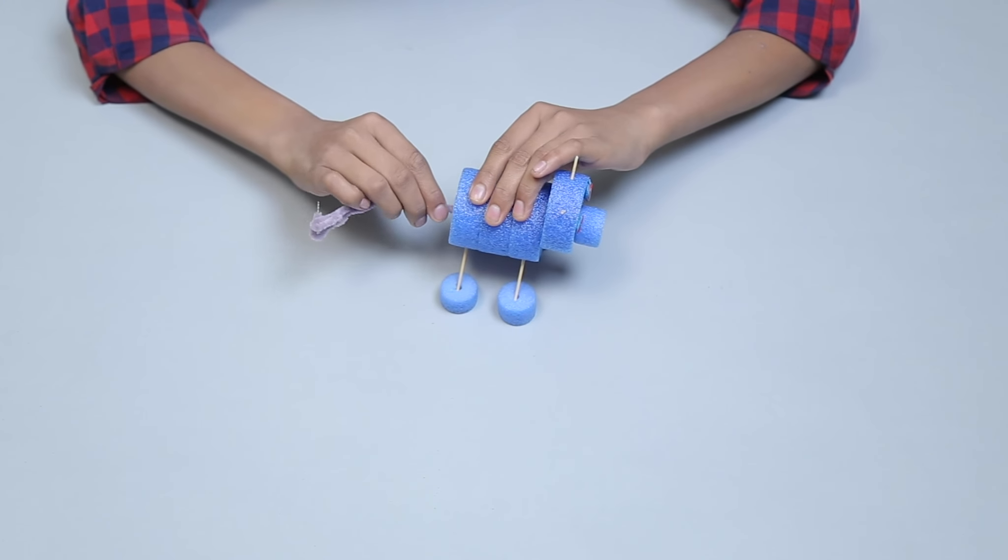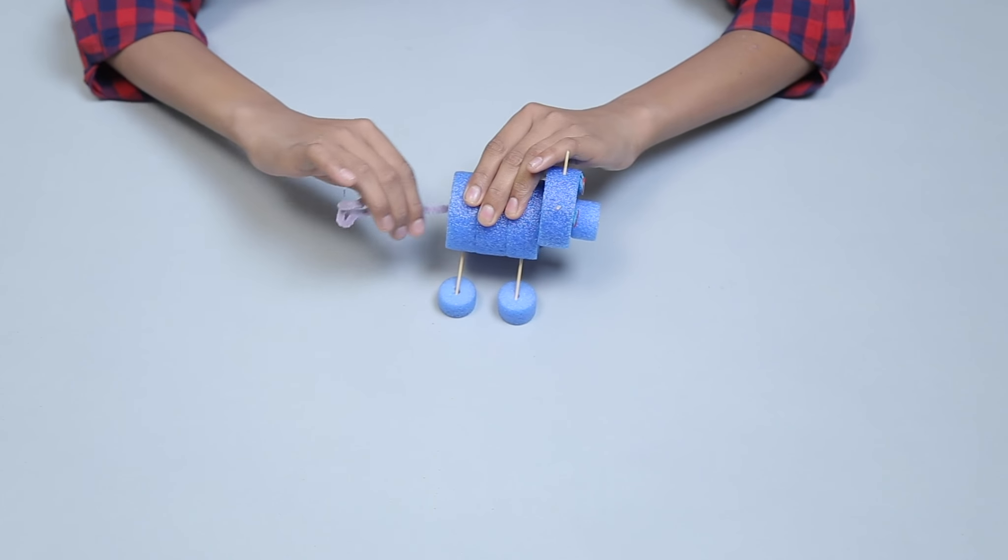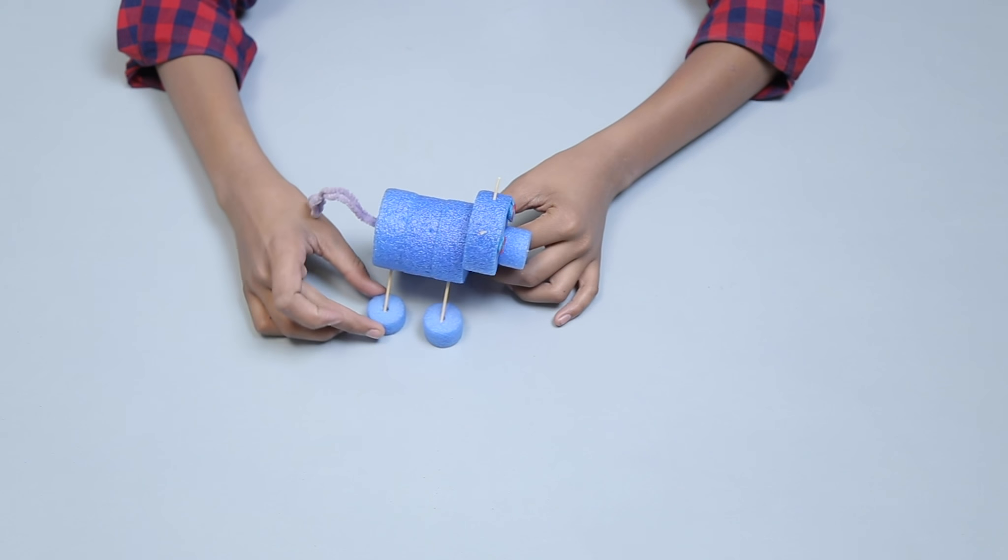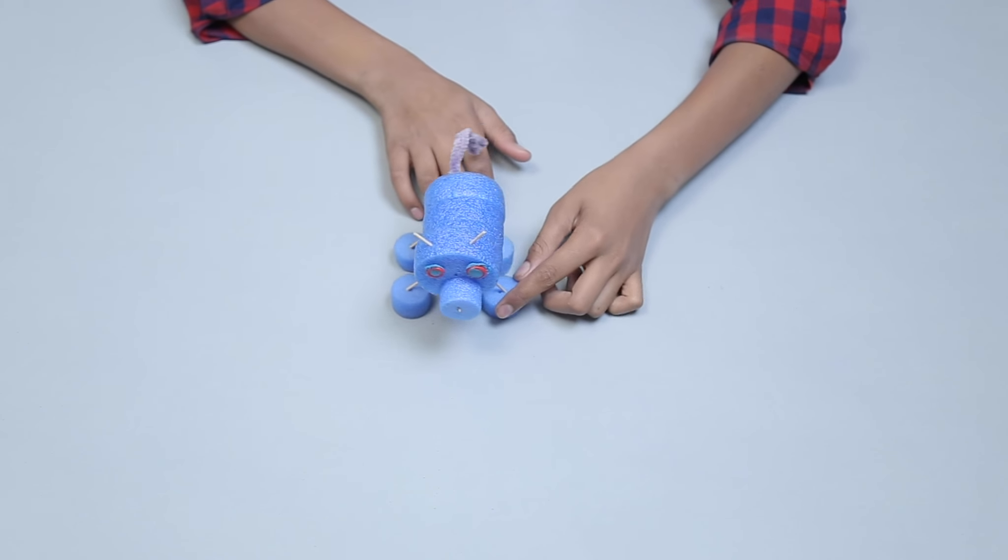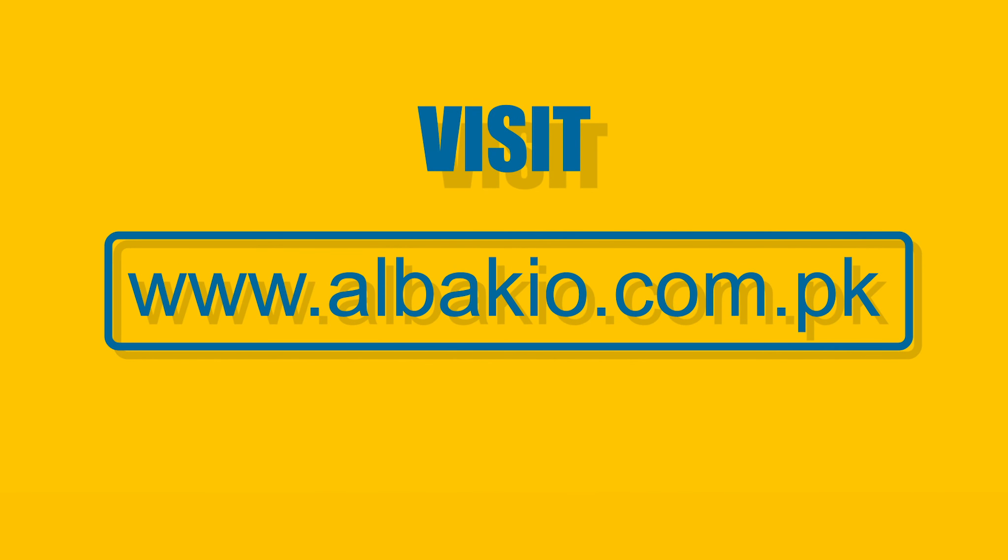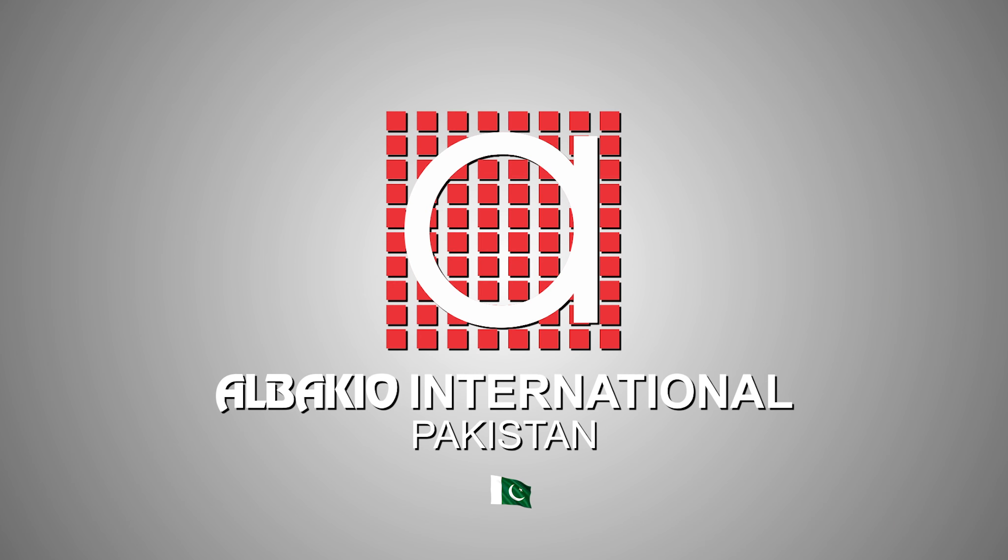Now attach the chenille stem with the big foam cylinder to make the tail.